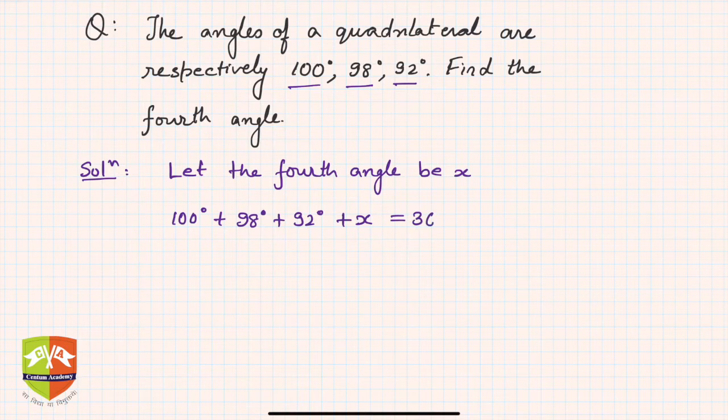Now if you add 100, 98, and 92, you will get 290 degrees. So 290 degrees plus x is equal to 360 degrees. And now it is a linear equation in one variable.